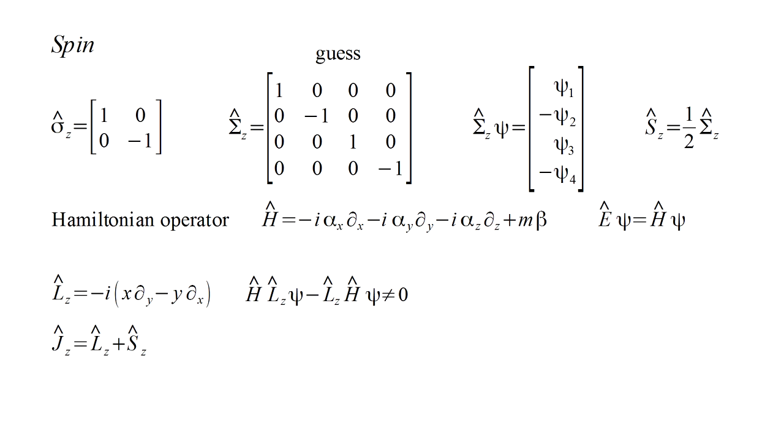The total angular momentum, j, equals the sum of the orbital and spin angular momenta. This does commute with the Hamiltonian. So, total angular momentum is conserved by the Dirac equation. And, our guess for the spin operator is consistent with this.